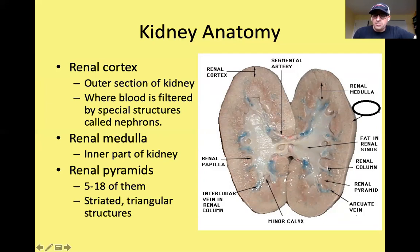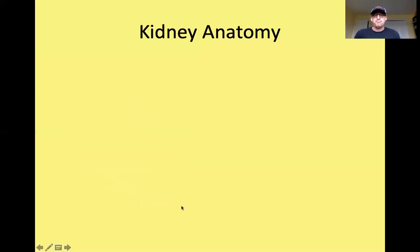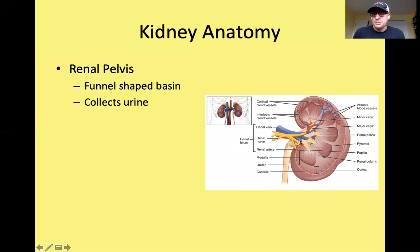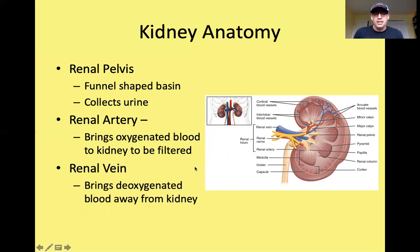The renal pyramids are striated triangular structures running throughout the kidney — those striations are actually caused by the little nephron tubes running through them. The renal pelvis is a funnel-shaped basin that collects urine formed in the nephrons. The renal artery brings oxygenated blood to the kidney for filtering, and the renal vein carries deoxygenated blood away.